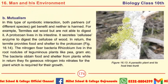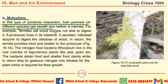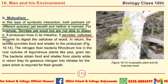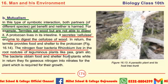The next topic is an important interaction: mutualism. In this type of symbiotic interaction, both partners of different species get benefit and neither is harmed. For example, termites eat wood but are not able to digest it on their own. Termites secrete cellulase enzymes to digest the cellulose of wood. The nitrogen-fixing bacterium rhizobium lives in the root nodules of leguminous plants like pea, gram, etc.